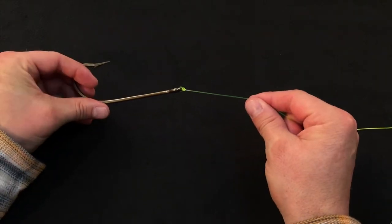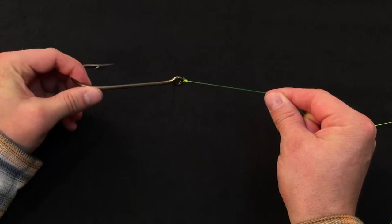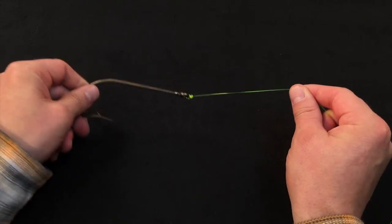With the improved clinch, you can clip it nice and tight because that tag end is locked in to prevent it from slipping. And that's the improved clinch.